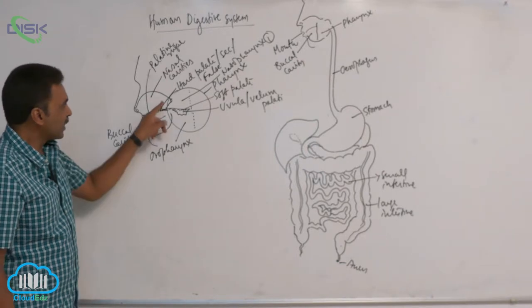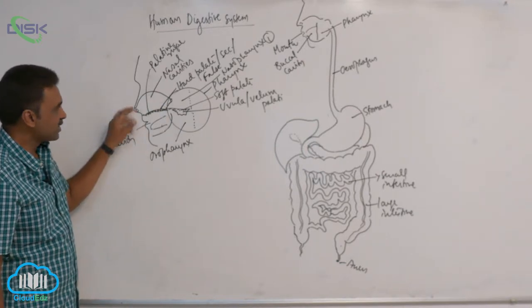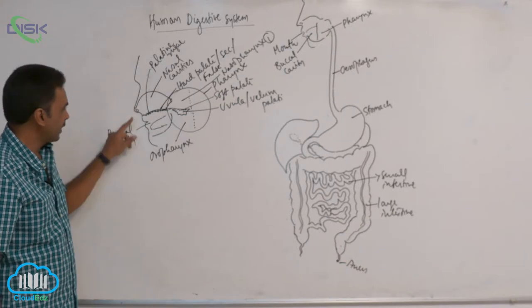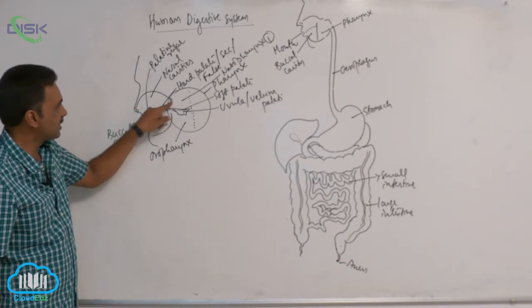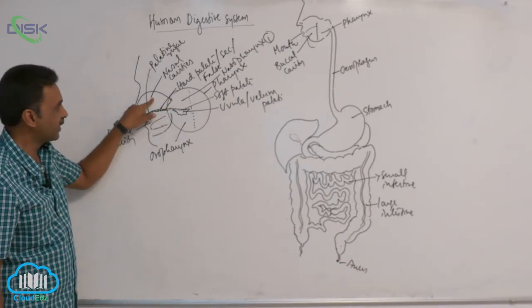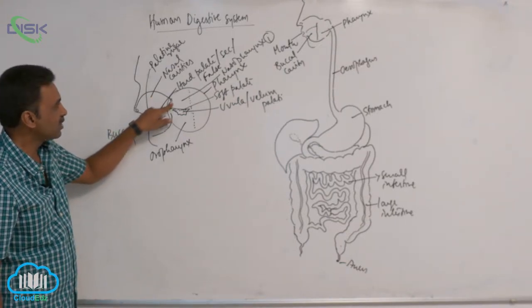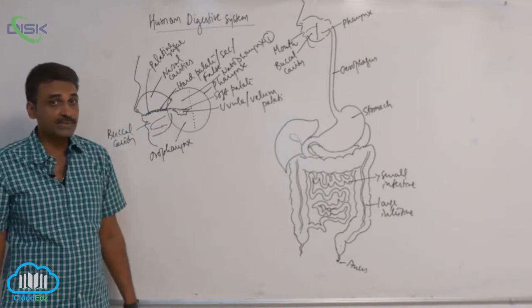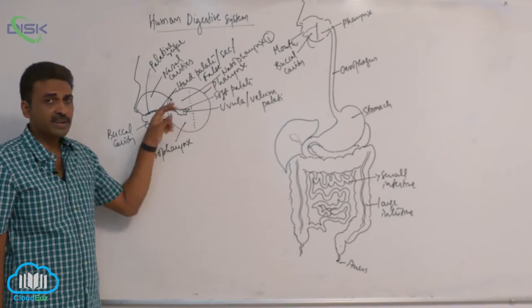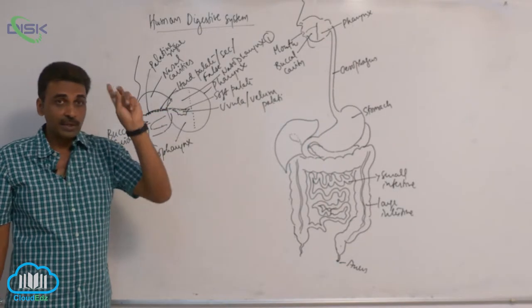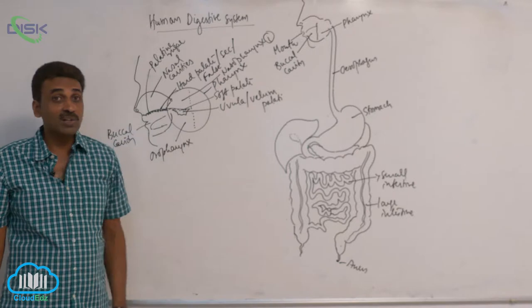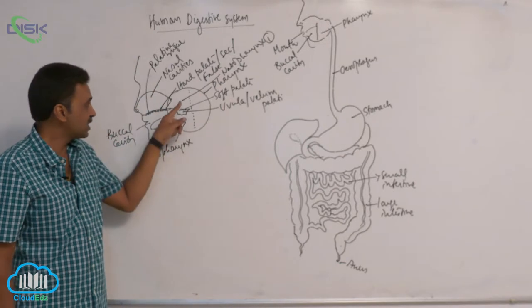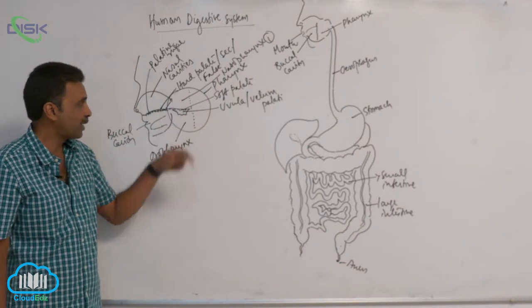The external nostrils are part of the respiratory system. External nostrils lead to internal nostrils and the nasal cavity. The internal nostrils open into the nasopharynx. Into the nasopharynx, the Eustachian canals from the middle ear also open.